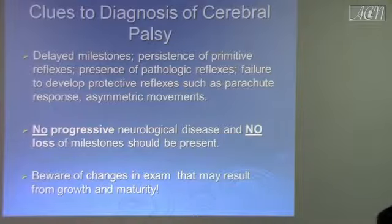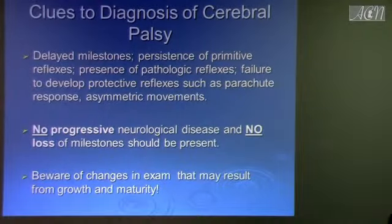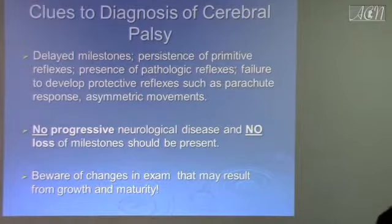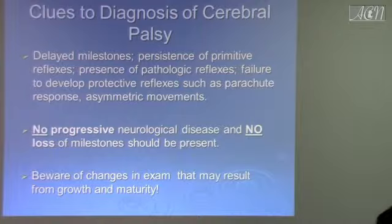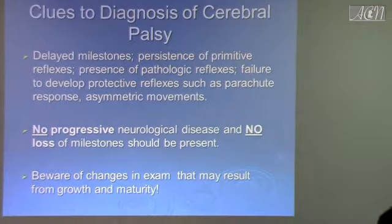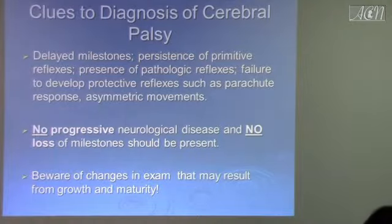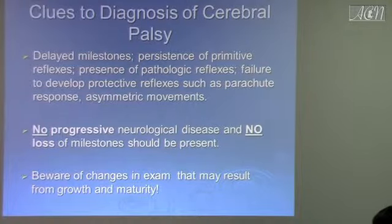No progressive neurological diseases and no loss of milestones should be present. Because if you see progressive neurological disease or loss of milestones, you're going to think about neurodegenerative disorders — that takes you to a different route and a different prognosis. CP kids are usually improving slowly or they are static, and sometimes they have pseudo-regression because of development, such as when hypertonia appears around one year of age. You have to be aware of a change in exam that may result from growth and maturity.